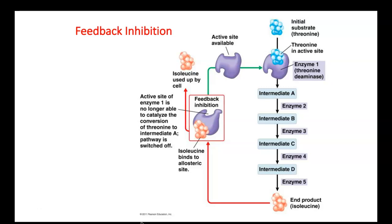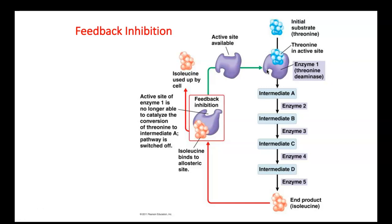Feedback inhibition is really important. Feedback inhibition is where the product of a pathway loops back around and inhibits the original enzyme that started the pathway. You have your initial substrate threonine; it binds to an enzyme, undergoes a series of reactions, and becomes isoleucine. Several conversions happen. But at some point enough isoleucine builds up and it loops around to bind to enzyme 1, changing the shape of the active site and stopping the production of more of it. That's called feedback inhibition — negative feedback. The product allosterically binds to the enzyme, changing the active site so that threonine can't bind anymore.